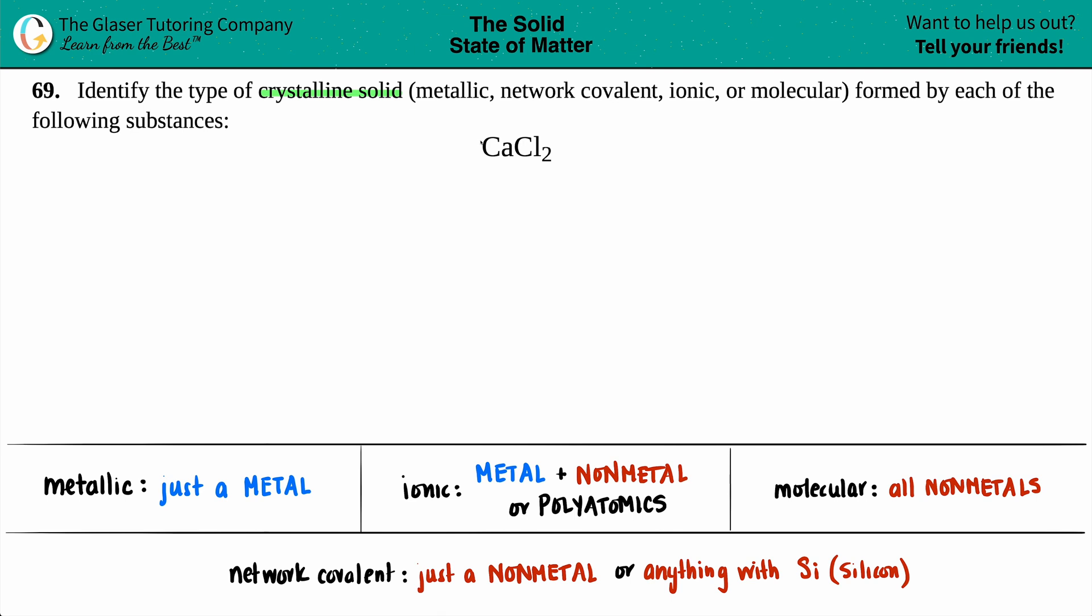What type of crystalline solid is CaCl2? Well, there's four different types and I wrote down a little cheat sheet down here for you guys to memorize for a test or quiz coming up if this material is on it. Let's start from left to right to determine which crystalline solid it is.